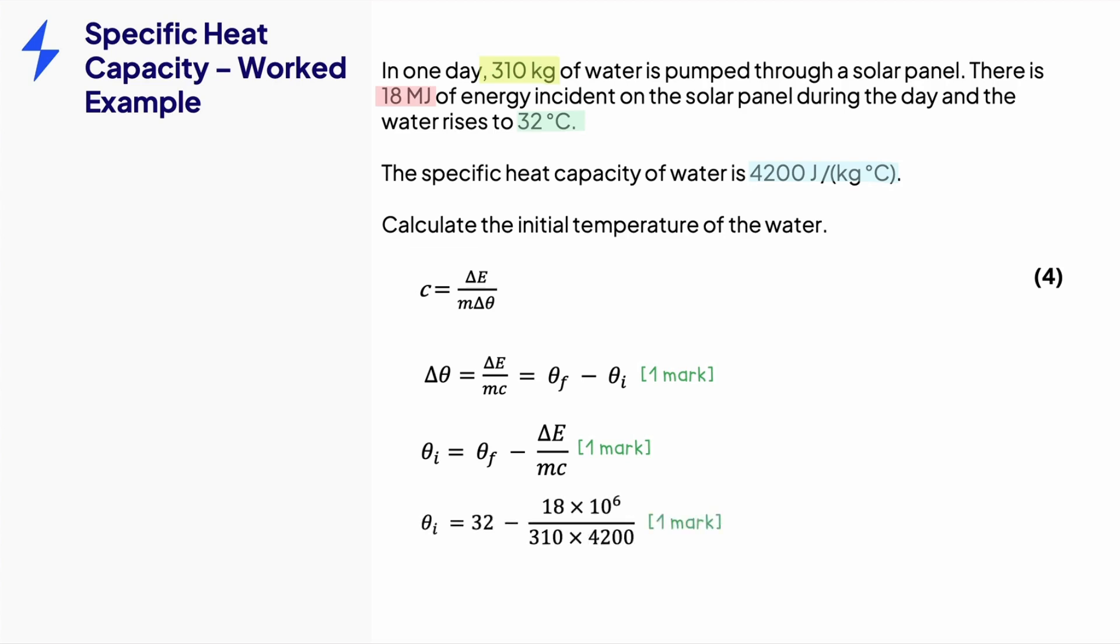Now, we need to substitute in the values for the third mark. Remember that the prefix capital M means mega or 10 to the power of 6. Putting this in your calculator should give you 18.175 or 18 degrees Celsius to two significant figures. This is the fourth and final mark.